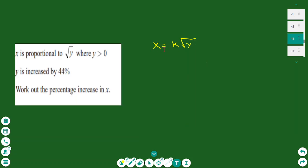x equals k times the square root of y. Because we don't have numbers but only percentage changes, we can make the original value of y to be 1. The value of y after the 44% increase will be 1.44.